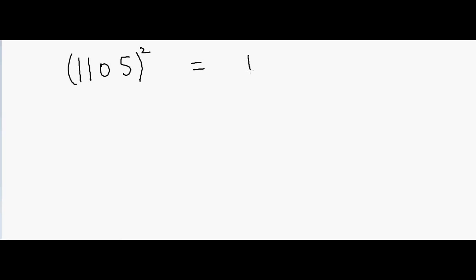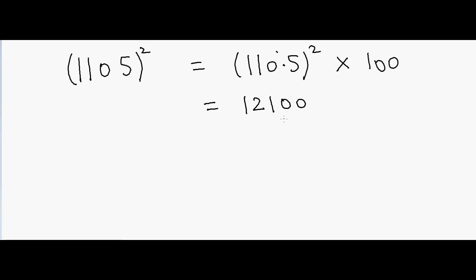Let's try one more example. Suppose if I have 1105 and I want to do the square of this number. I can write it as 110.5 squared times 100. So 110 squared is 12100, and then we add 110.25 in the end. So that will be equal to 12210.25, and multiplying by 100 gives 1221025.